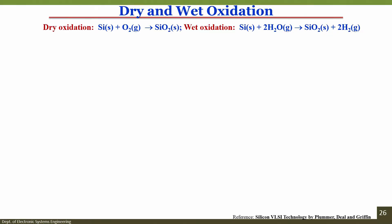This hydrogen escapes as a gas and you grow the silicon dioxide. Both processes have their pros and cons. In dry oxidation you have silicon plus oxygen reacting at high temperature giving silicon dioxide. In wet oxidation, silicon is solid (S) and water vapor is gaseous (G), giving SiO2 plus 2H2.